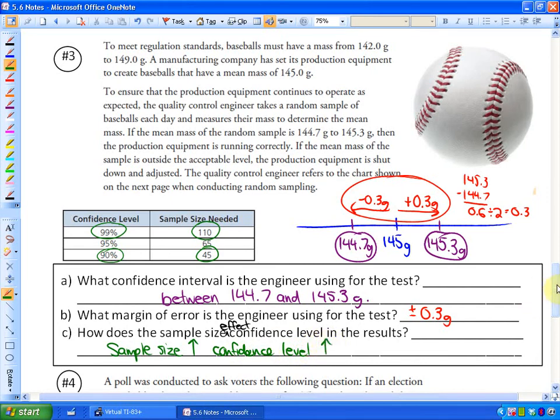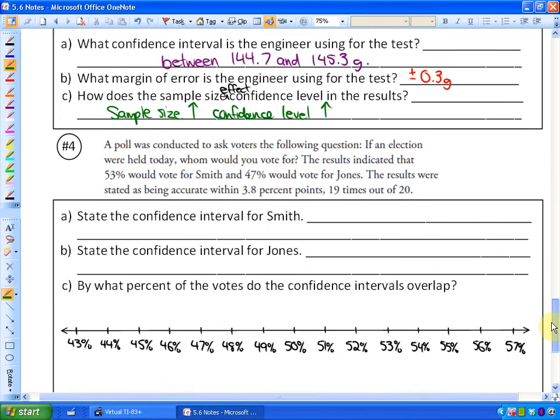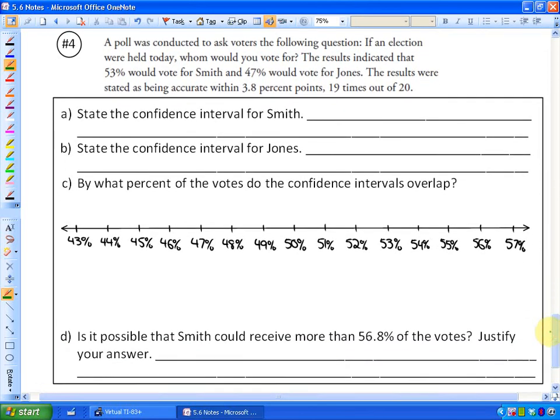Let's look at the last example. We're going to look at a survey or a poll having to do with voters. This is often, confidence intervals are often used in polls. So a poll was conducted to ask voters the following question: If an election were held today, whom would you vote for? The results indicated that 53% would vote for Smith and 47% of people would vote for Jones. The results were stated as being accurate within 3.8% points, 19 times out of 20. So I'm going to use the visual here, and that's going to help answer all the questions.